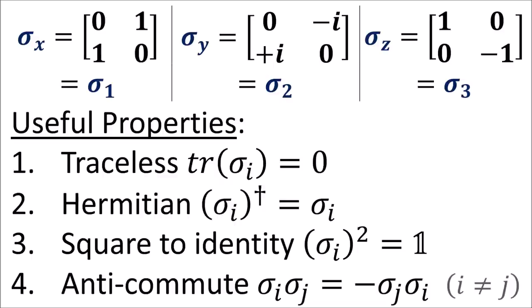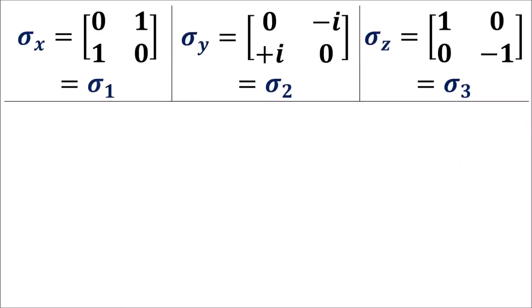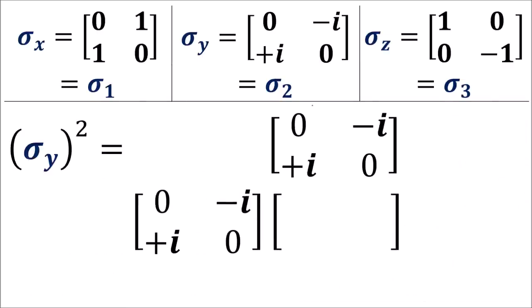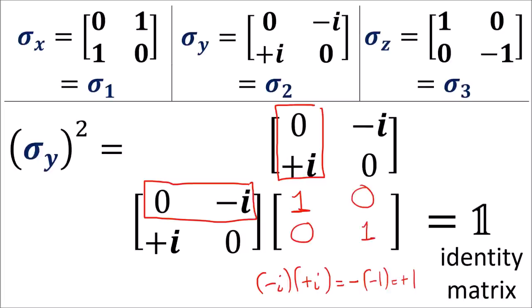The third property says that all sigma matrices square to the identity matrix. I'll show this explicitly for sigma y. The inner product of the first row and the first column gives us plus i times minus i, and since i squared equals negative 1, this is just negative minus 1, or plus 1. The other inner products give us 0, 0, and another plus 1, which is the identity matrix. You can check that sigma x and sigma z also square to the identity matrix.